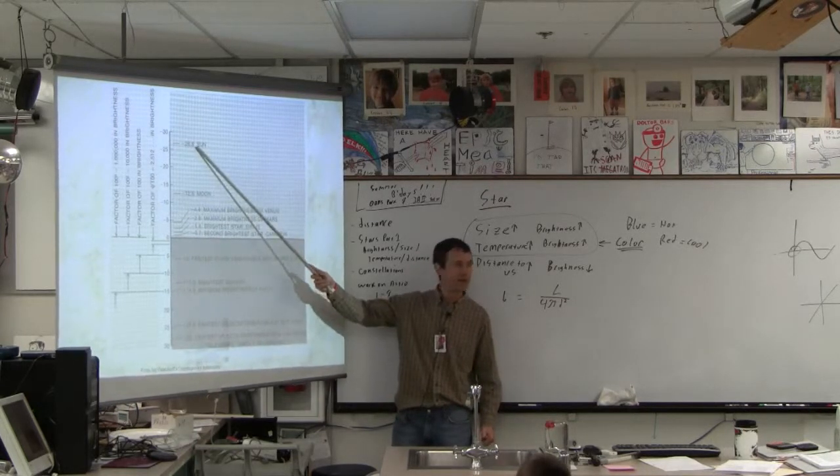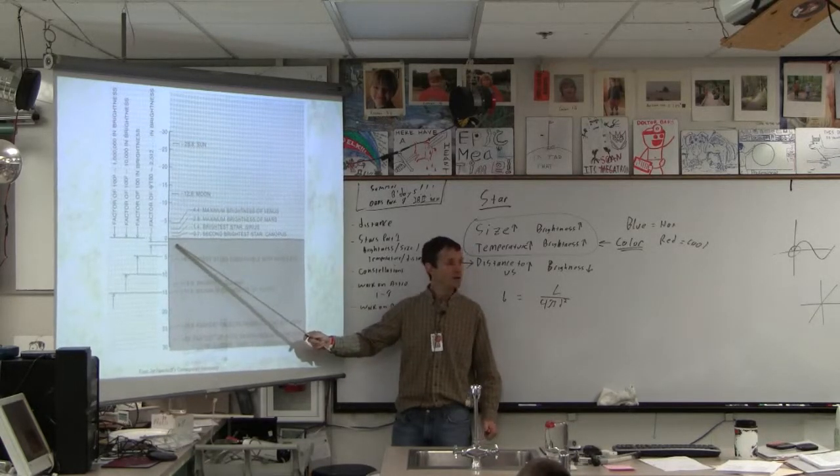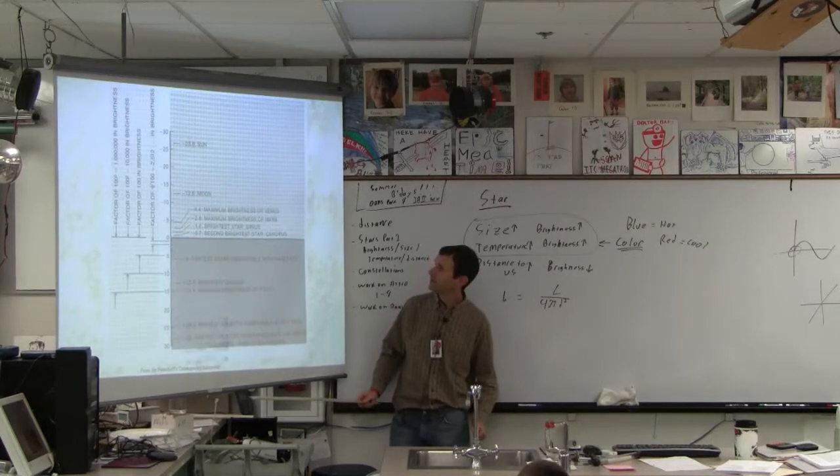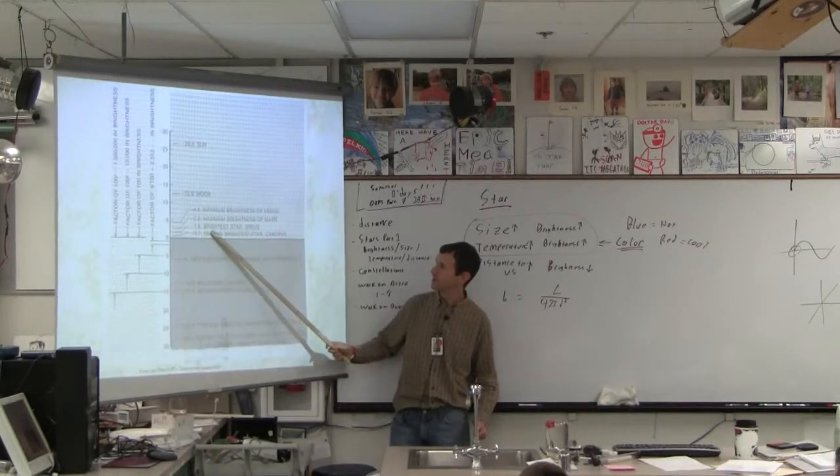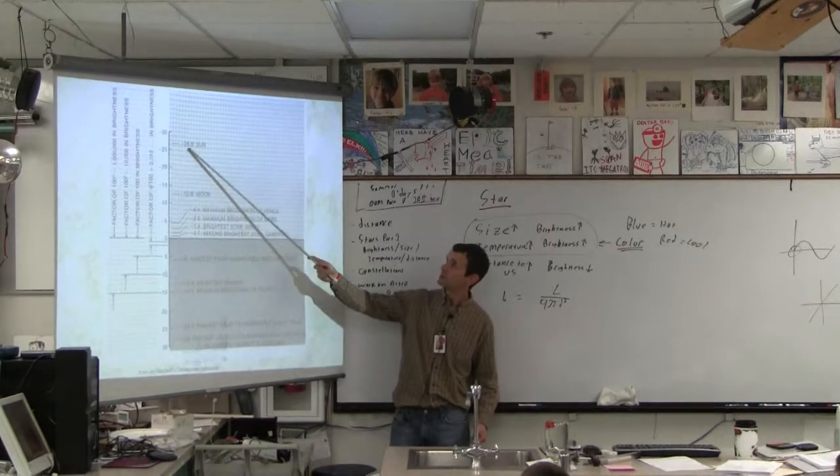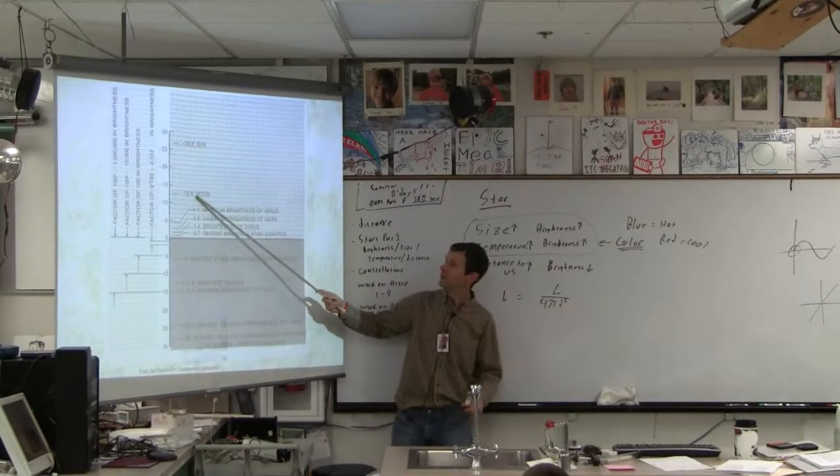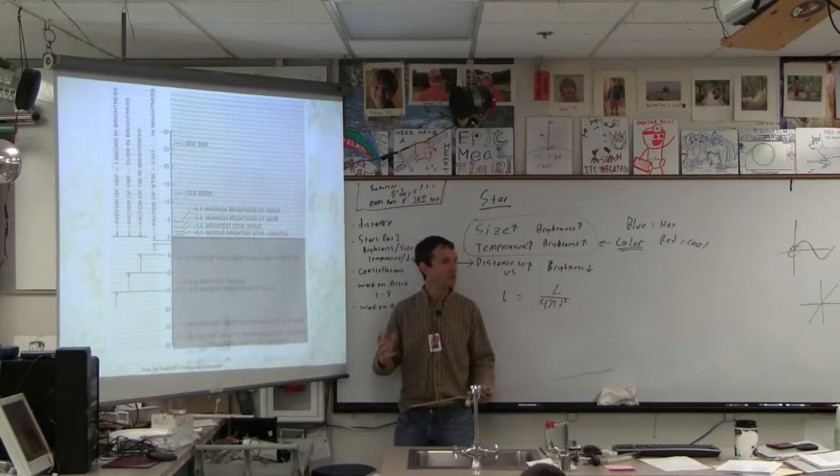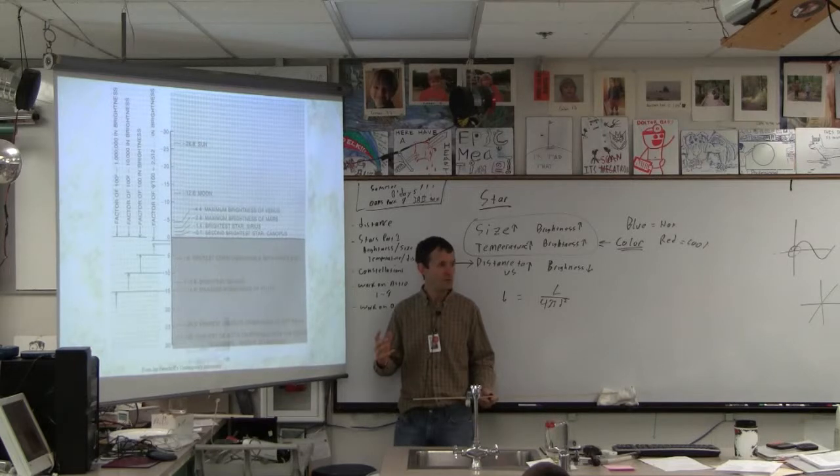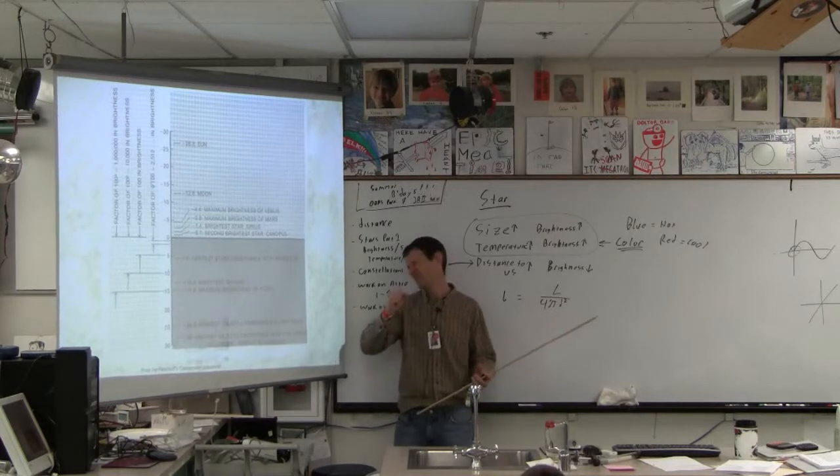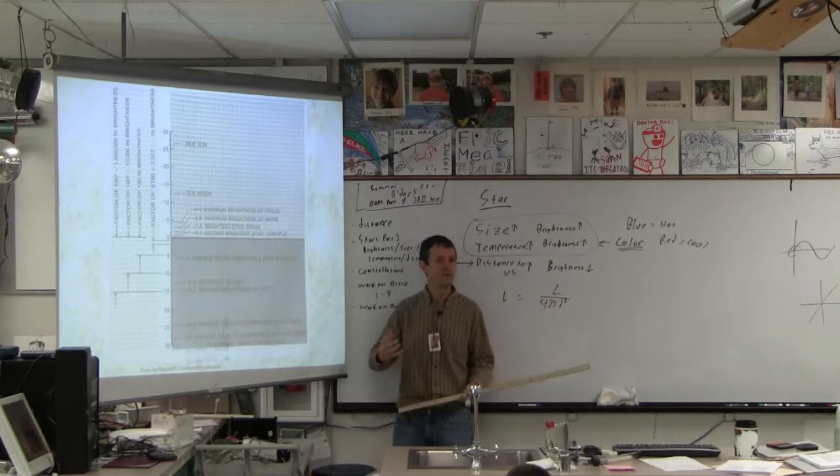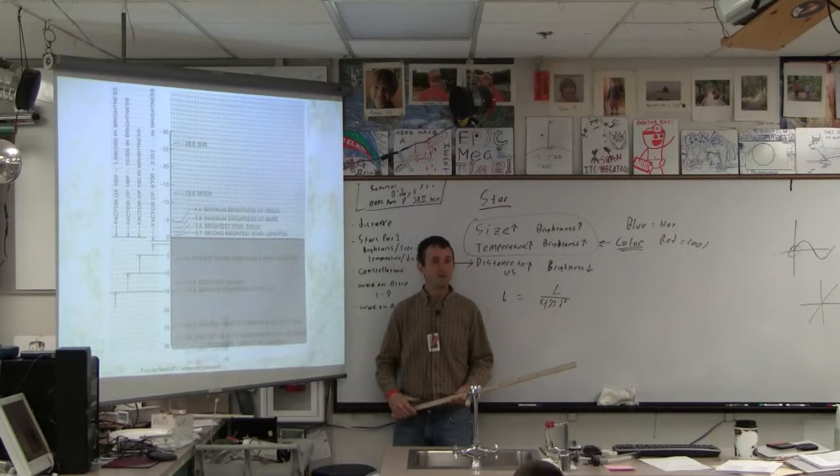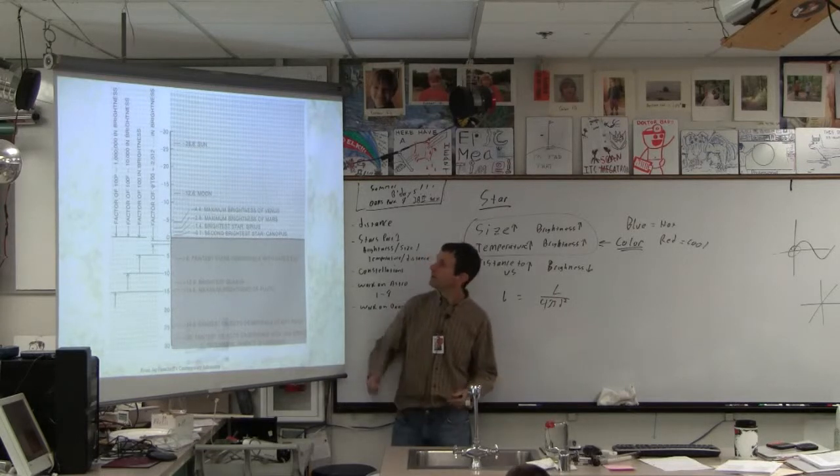So the faint things are actually big positive numbers. Bright things, like the sun, is a negative number. Zero is the brightness of an ordinary bright star. The sun is of course the brightest object in the sky. The next brightest thing is the full moon, which if you ever have a big telescope and you look at the full moon, it's actually too bright. The full moon is too bright for like an 8-inch telescope. You're like, I need sunglasses for this. Because one of the jobs of a telescope is to concentrate the light, gather light.